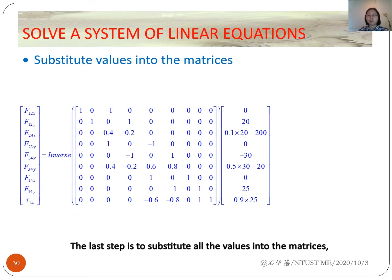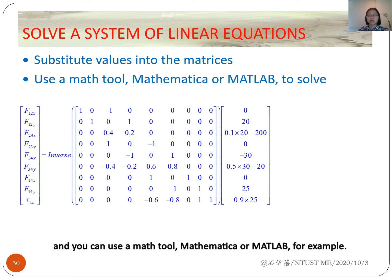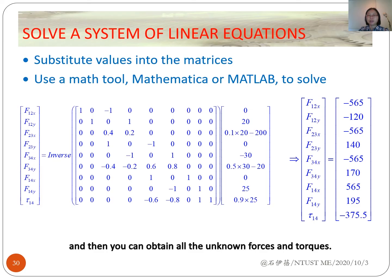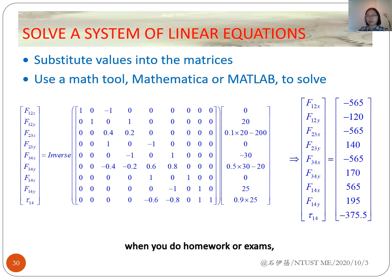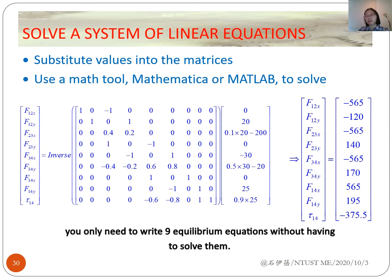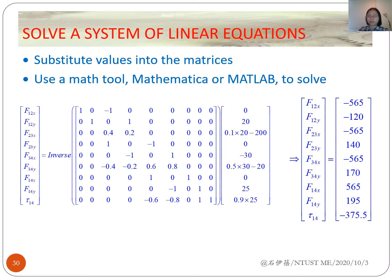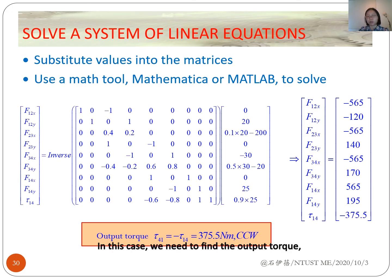The last step is to substitute all the values into the matrix. You can use a math tool such as MATLAB, for example, to calculate the inverse of the coefficient matrix, and then you can obtain all the unknown forces and torques. However, if you do not have access to a math tool during homework or exams, you only need to write the nine equilibrium equations without having to solve the matrix. In this case, we need to find the output torque, so we flip the direction of torque Tau14 to get Tau41.